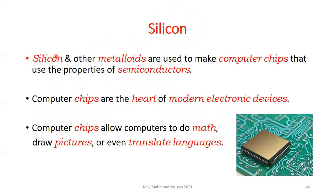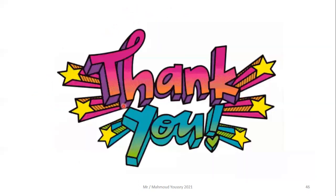The most important metalloid example is silicon. Silicon and other metalloids are used to make computer chips that use the properties of semiconductors. Computer chips are the heart of modern electronic devices — they allow computers to do math, draw pictures, and even translate languages, all thanks to chips made of silicon. That brings us to the end of our session today. Thank you for watching, and see you in the next one!